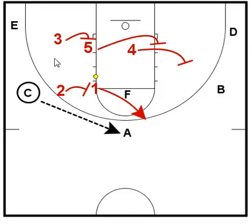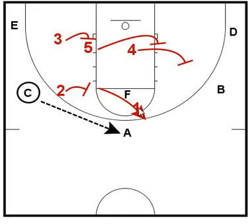Here we are in a 2-3 zone. In this situation, C is on the wing with the ball and 2 is guarding C. C makes that pass over to A, and right away our movement shows that 1 is going to slide over and take that outside shoulder of A. We really want to make sure that they don't make the easy swing pass to B, so that's why we attack that shoulder.